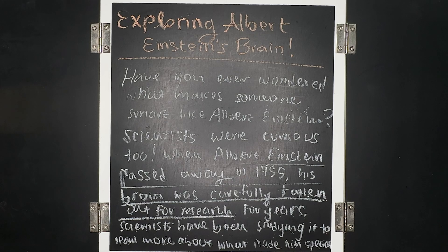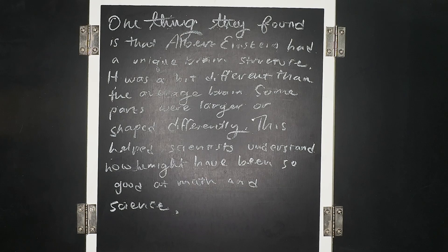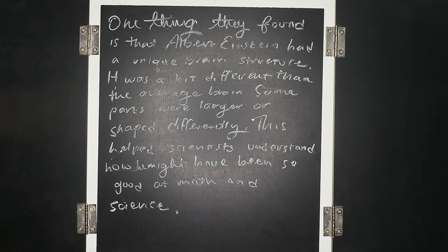Talking about how Albert Einstein's brain was taken out for research can definitely help us with this topic. One thing they found is that Albert Einstein had a unique brain structure. It was a bit different than the average brain — some parts were larger or shaped differently. This helped scientists understand how he might have been so good at math and science.